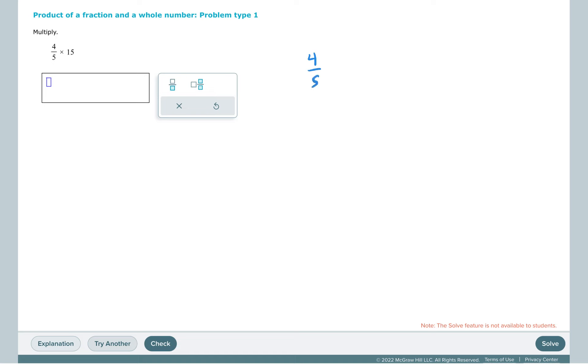And one last problem, 4 fifths times 15 can be thought of as 4 fifths times 15 over 1. We have 4 times 15, and 5 times 1. We can simplify. 5 goes into 5 once. 5 goes into 15 three times. 4 times 3 is 12, and the denominator is going to be 1.